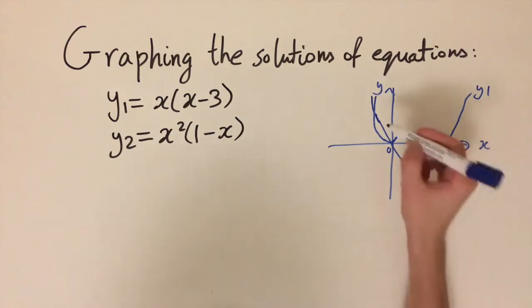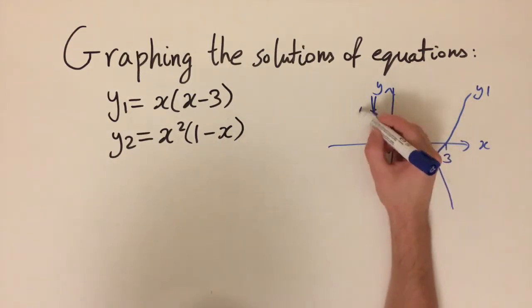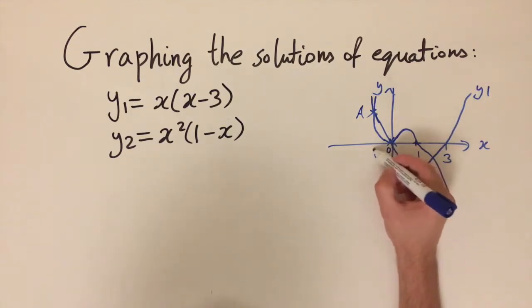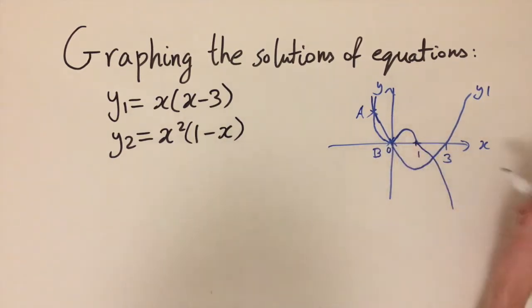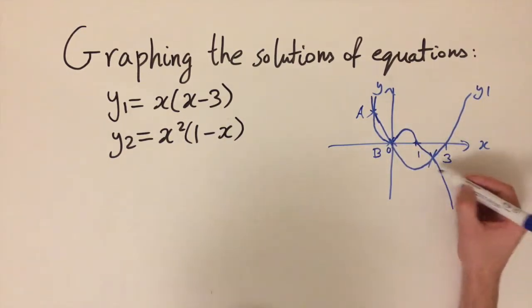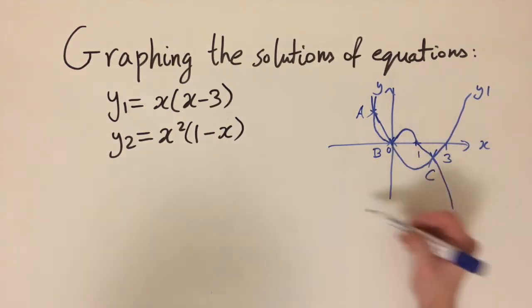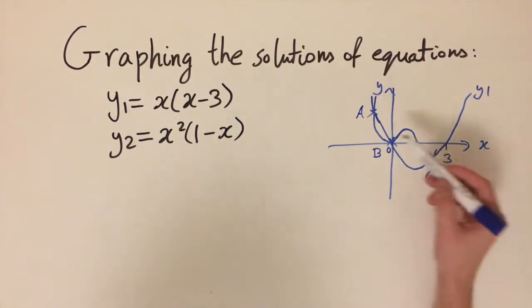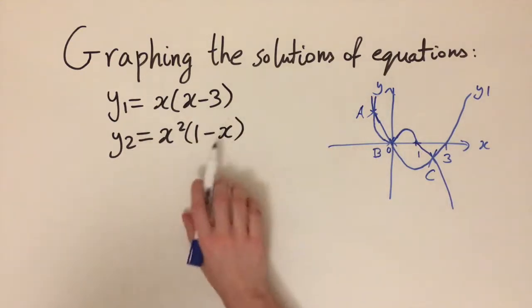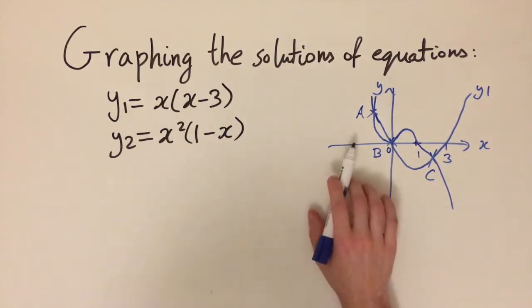We can see where the graphs intersect. There's one place of intersection here — I'll label this A — another one at the origin, label that B, and a third one down in the bottom right corner, labeled C. So from this diagram we expect to see three solutions.